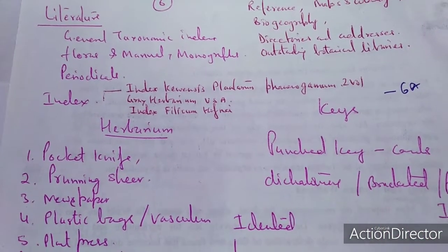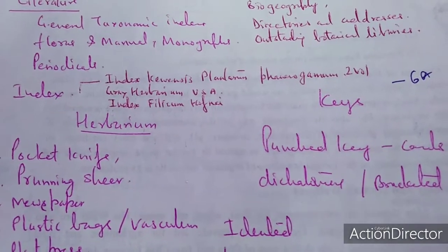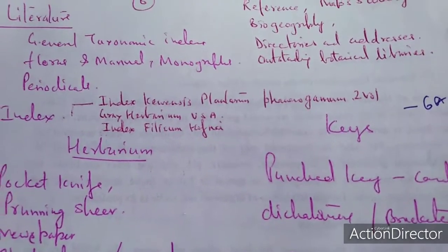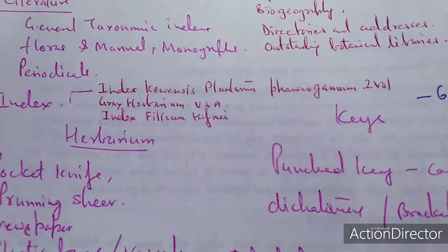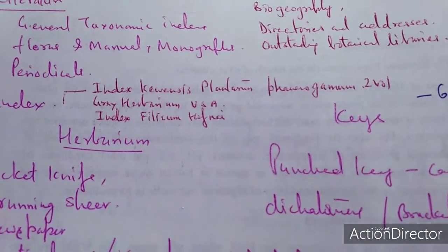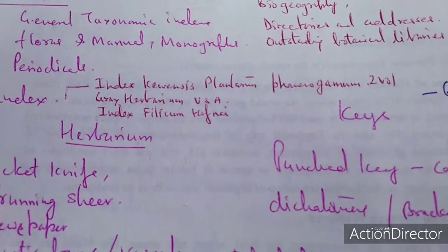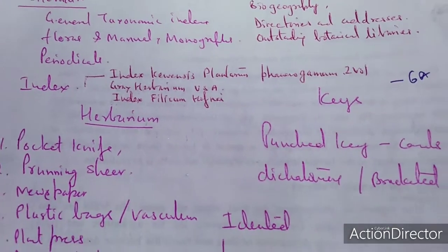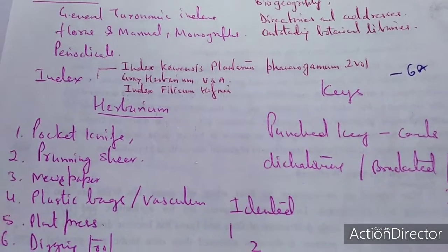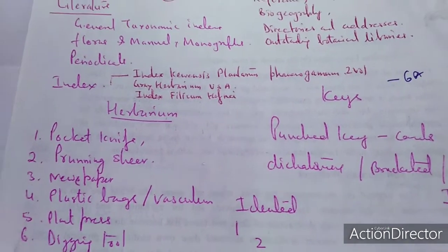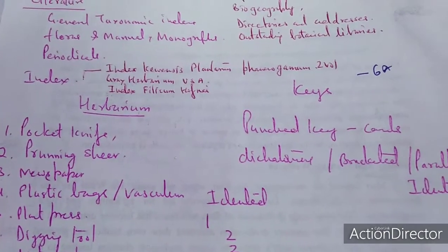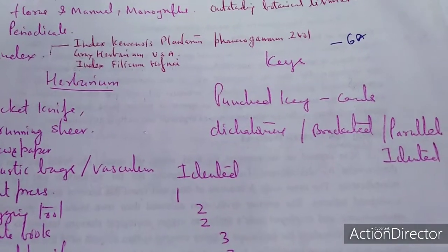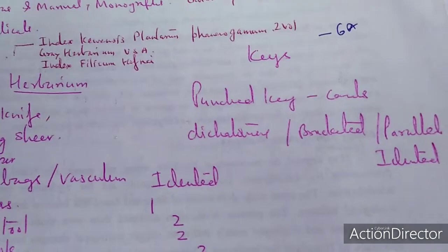Certain indexes are there: Index Kewensis Plantarum Phanerogamarum, the Gray Herbarium card index, and Index Filicum Hoffmanniae. Once the identification has been done, two types of keys can be formulated: the punched key as well as the dichotomous key. The dichotomous key is again divided into the bracketed key and the parallel key.